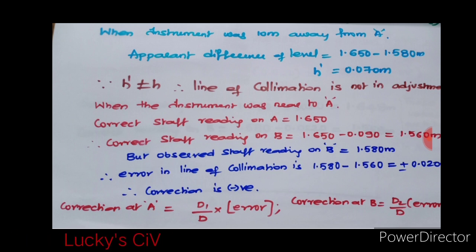You got H as 0.090 and H-apparent as 0.070. Since H-apparent is not equal to H, then the collimation error is there, means the line of collimation is not in adjustment.